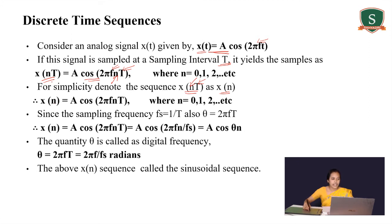So we can rewrite the x(nT) expression as x(n) = A cos(2πfnT). Since the sampling rate T is inversely proportional to the sampling frequency — that is fs = 1/T — we can replace T by 1/fs to get the expression for the discrete time sequence as A cos(2πfn/fs).